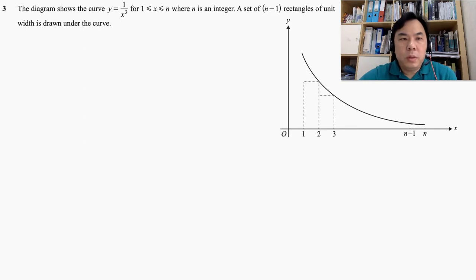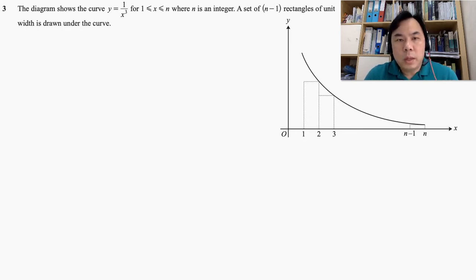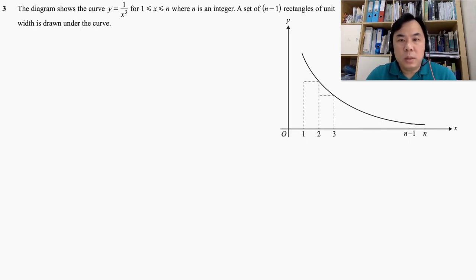Here we are given a graph represented by the function y equal to 1 over x to the power of 3. The restriction set on the domain is that x must be lying between 1 and n, where n is an integer number. A set of n minus 1 rectangles of unit width is drawn under the curve, as you can see from the diagram on the right.